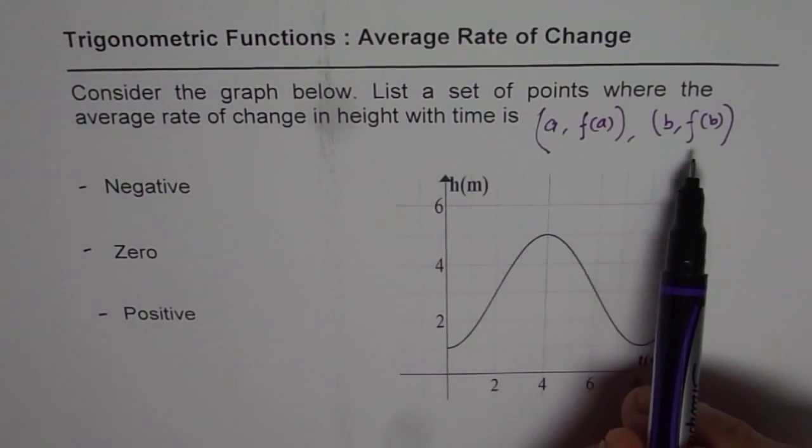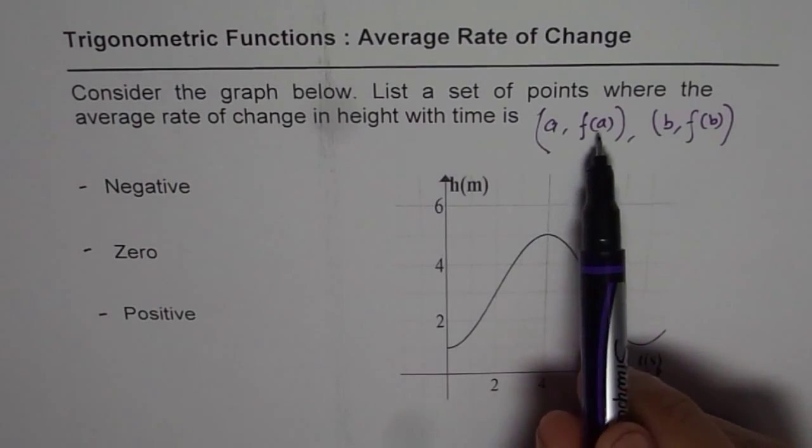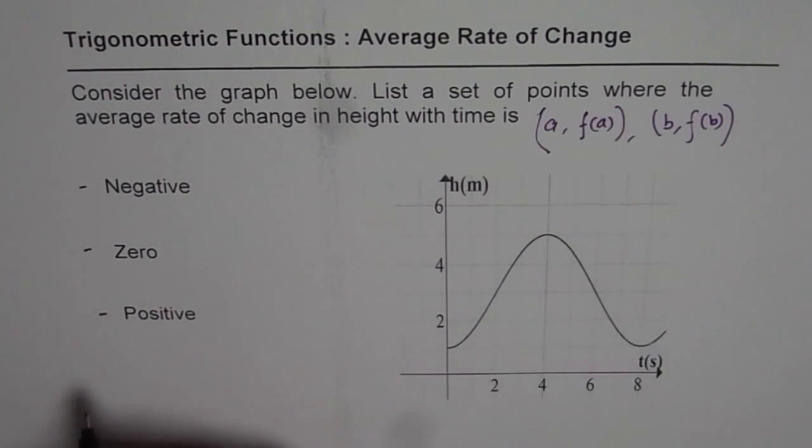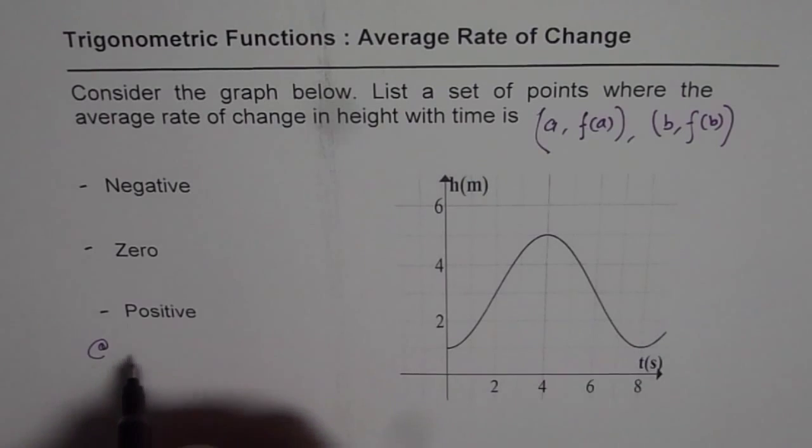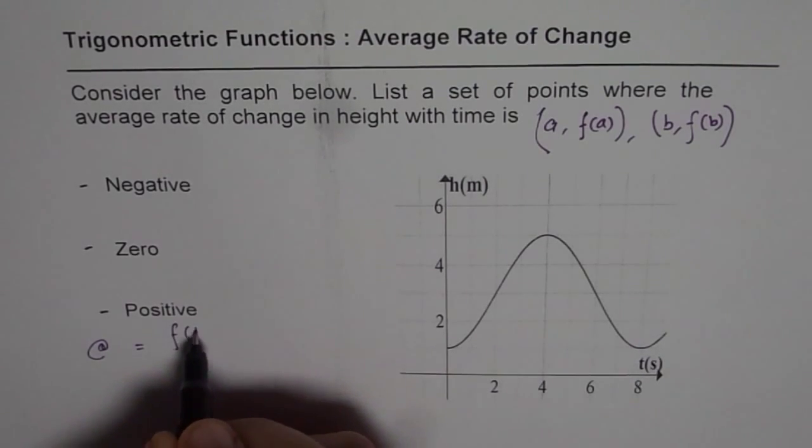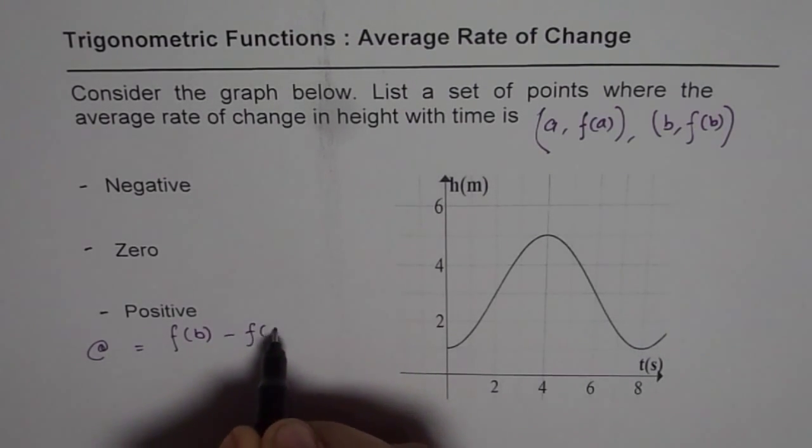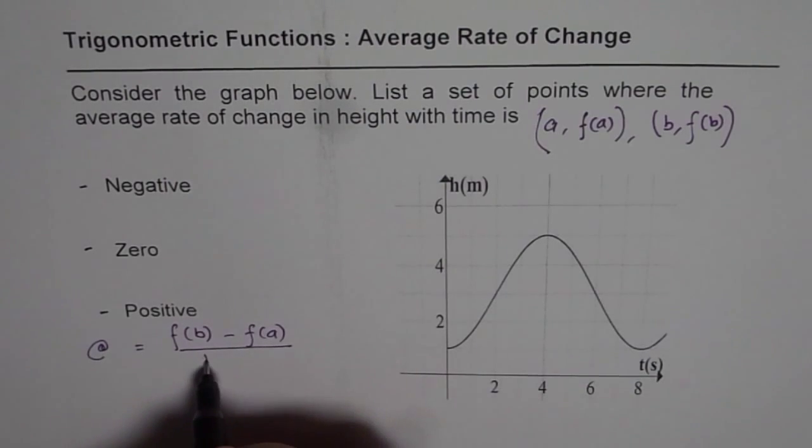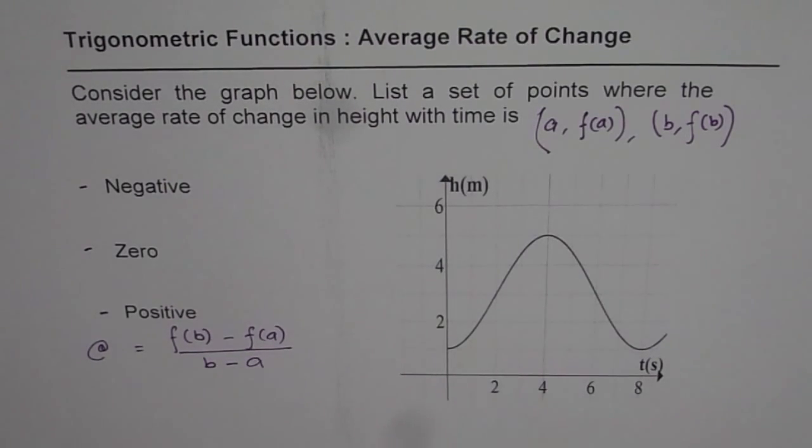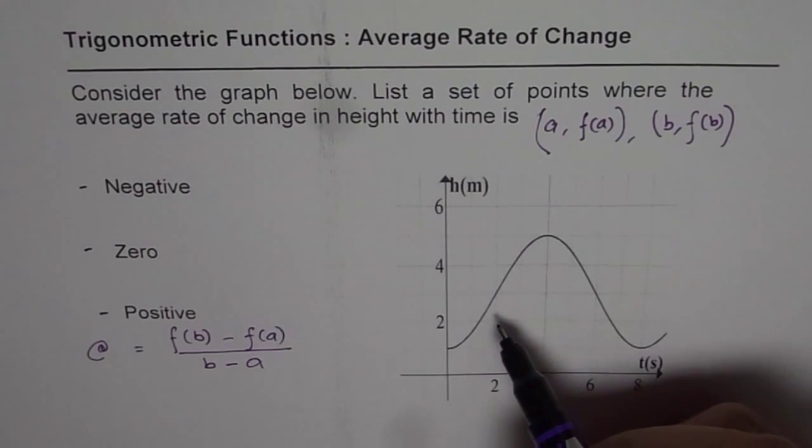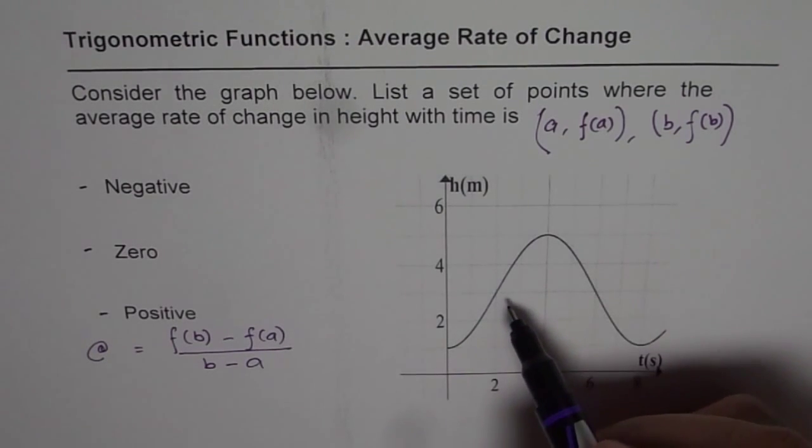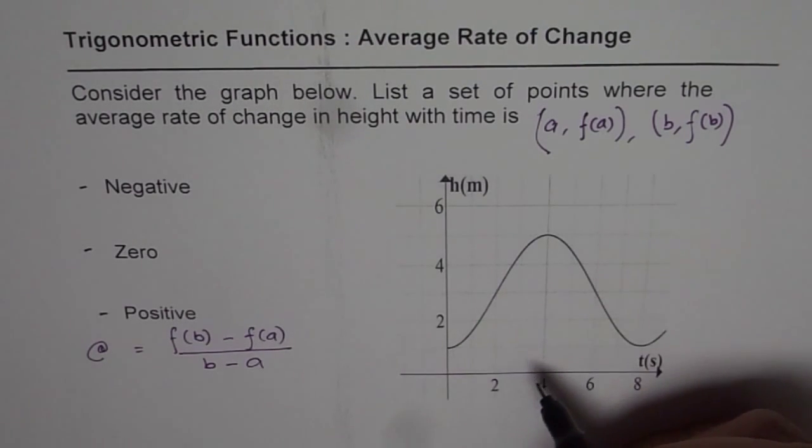Average rate of change is difference quotient, which is F(B) minus F(A) divided by B minus A. Now on a graph, if you take a set of points and join them, then you get secant line. Slope of that secant line tells you what the average rate of change is.